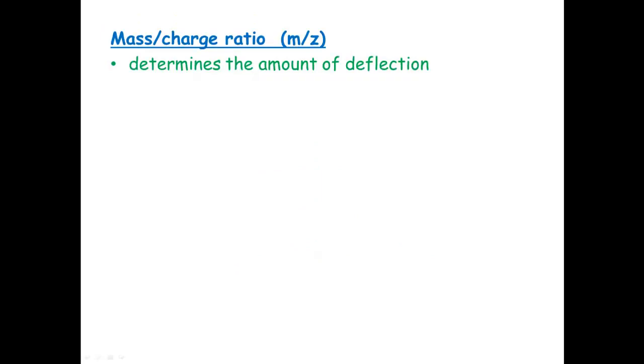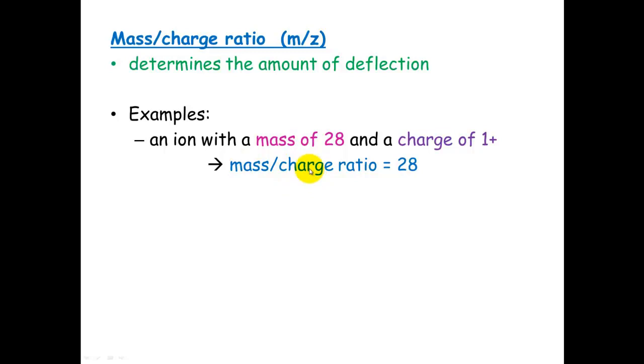Because there's two factors, the mass and the charge, which can be responsible for the bending or the deflection, we come up with what's called the mass-to-charge ratio. And it's important that we consider both of these when we're trying to determine the mass of an isotope. So an example of what I'm talking about is if you've got an ion with a mass of 28 and a charge of 1 positive, the mass-to-charge ratio would be 28, 28 divided by 1.